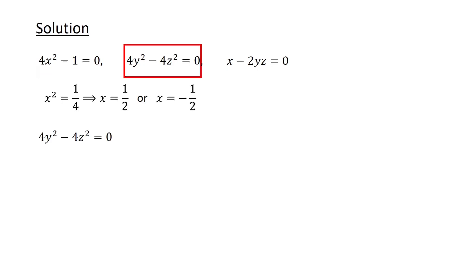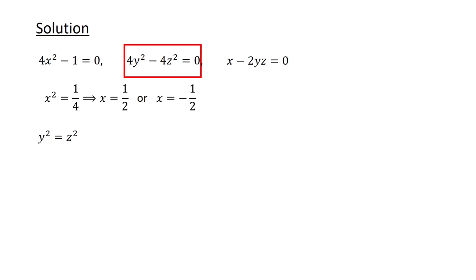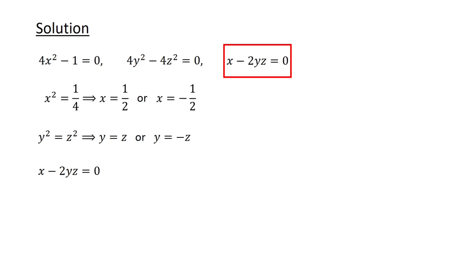For the equation 4y squared minus 4z squared equals 0, we add 4z squared to both sides to get 4y squared equals 4z squared. Then divide by 4 to get y squared equals z squared. Taking the square root, we obtain y equals z or y equals minus z. For the equation x minus 2yz equals 0, we add 2yz to both sides to obtain x equals 2yz.